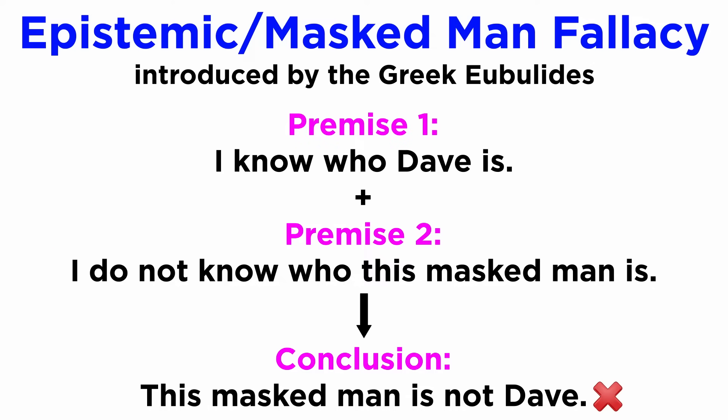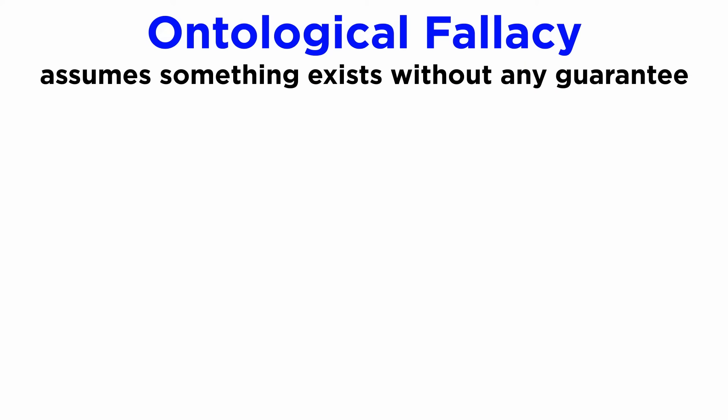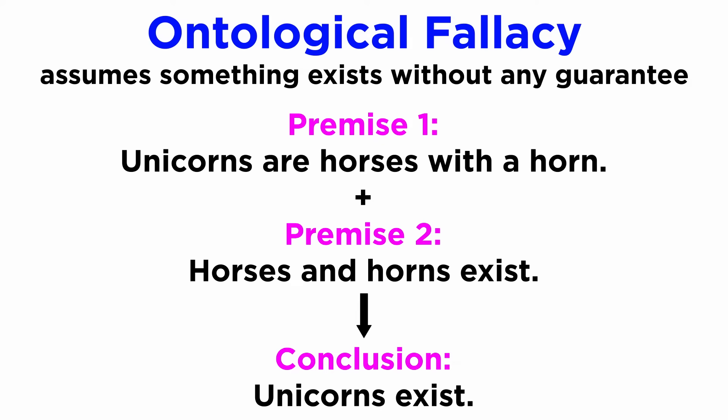This is of course invalid, since the lack of knowledge of who lies behind the mask is not correlated in any way to whether it is or is not Dave — thus its epistemic reference, as the knowledge or belief of an entity is different from that entity itself. Similar but lesser known, there is also an ontological fallacy, or fallacy of misplaced concreteness, which mistakenly assumes that something exists without the guarantee that it exists in reality. For example: unicorns are horses with a horn; horses and horns exist; therefore unicorns exist. This is invalid even though all concepts share some likeness — from the fact that there is something called horse and another thing called horn, it is not true that anything called unicorn will exist.